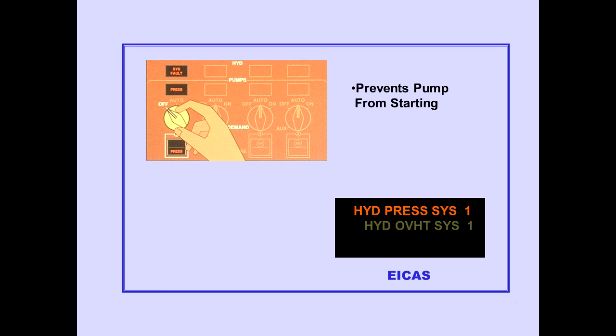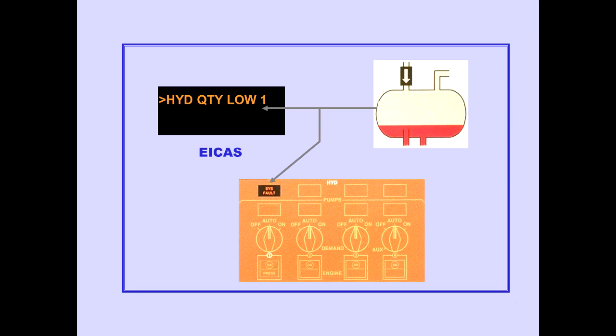Rotating the demand pump selector off prevents the demand pump from starting as the engine pump pressure decreases. With the engine pump switch off and the demand pump selector off, the ICAS Caution Message Hydraulic Pressure System is displayed. The ICAS Advisory Message Hydraulic Quantity Low is displayed when a hydraulic system fluid quantity is low. The system fault light illuminates.